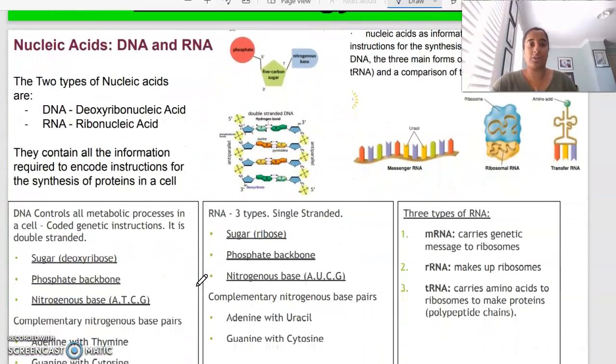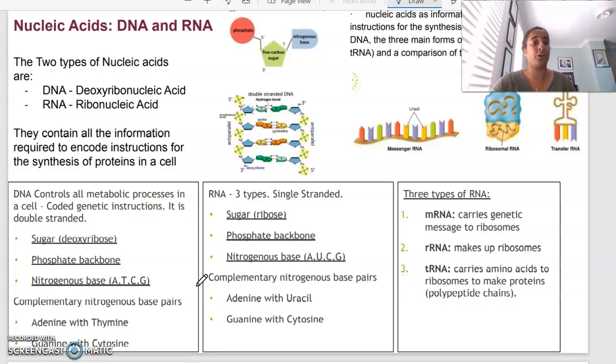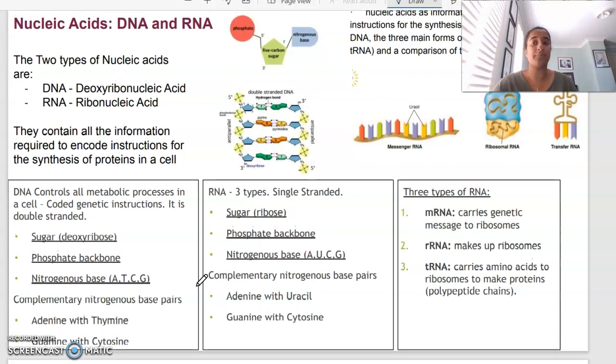In terms of nucleic acids, nucleic acids are basically information molecules that encode instructions. The two types of nucleic acids that we look at are DNA, deoxyribonucleic acid, and RNA, ribonucleic acid. They basically contain all of the information required to encode instructions for the synthesis of some kind of protein.